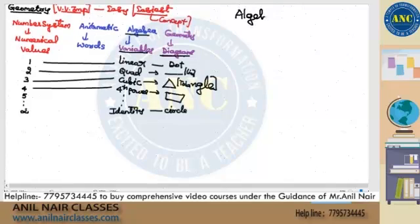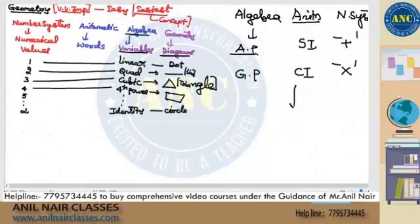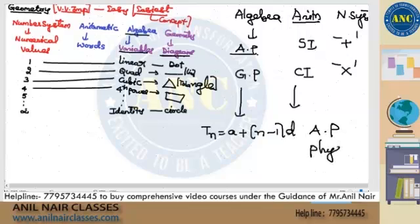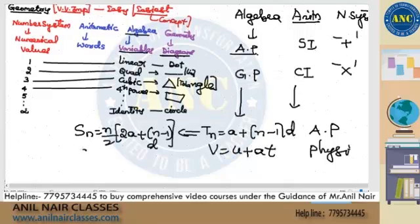In algebra, arithmetic progression corresponds to simple interest in arithmetic, and addition in number system. Similarly, GP corresponds to compound interest and multiplication by n². If you use the nth term formula — a + (n−1)d in AP — the same structure appears in physics as v = u + at, and the sum formula Sn = n/2 × [2a + (n−1)d] corresponds to s = ut + ½gt². All are similar.